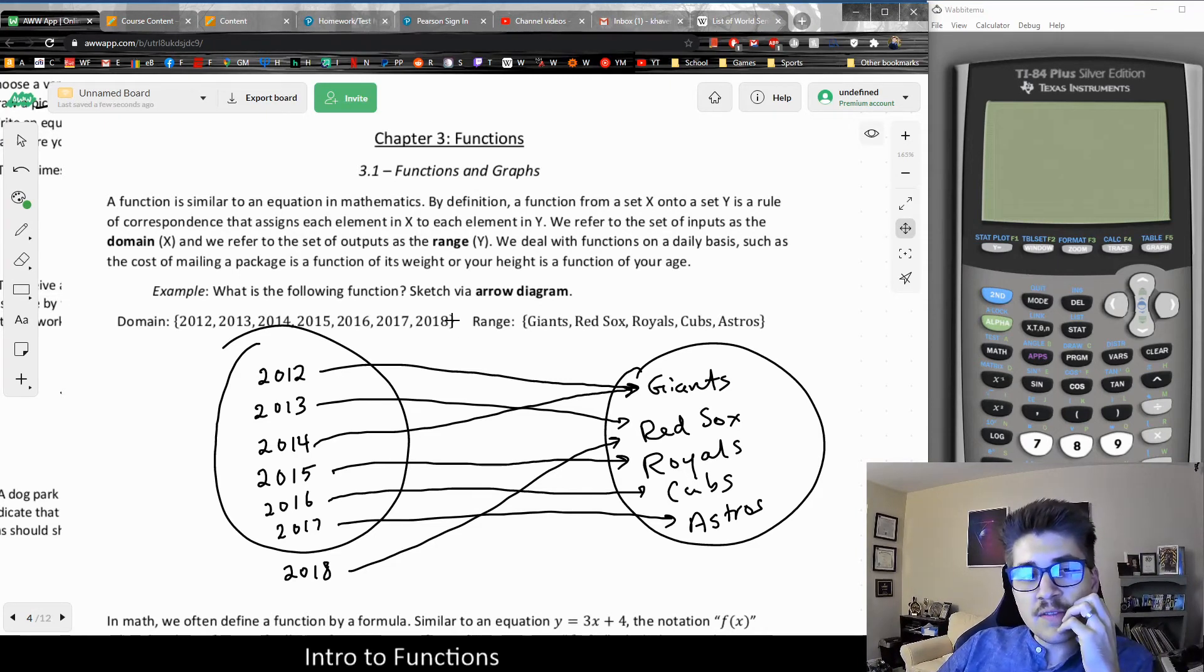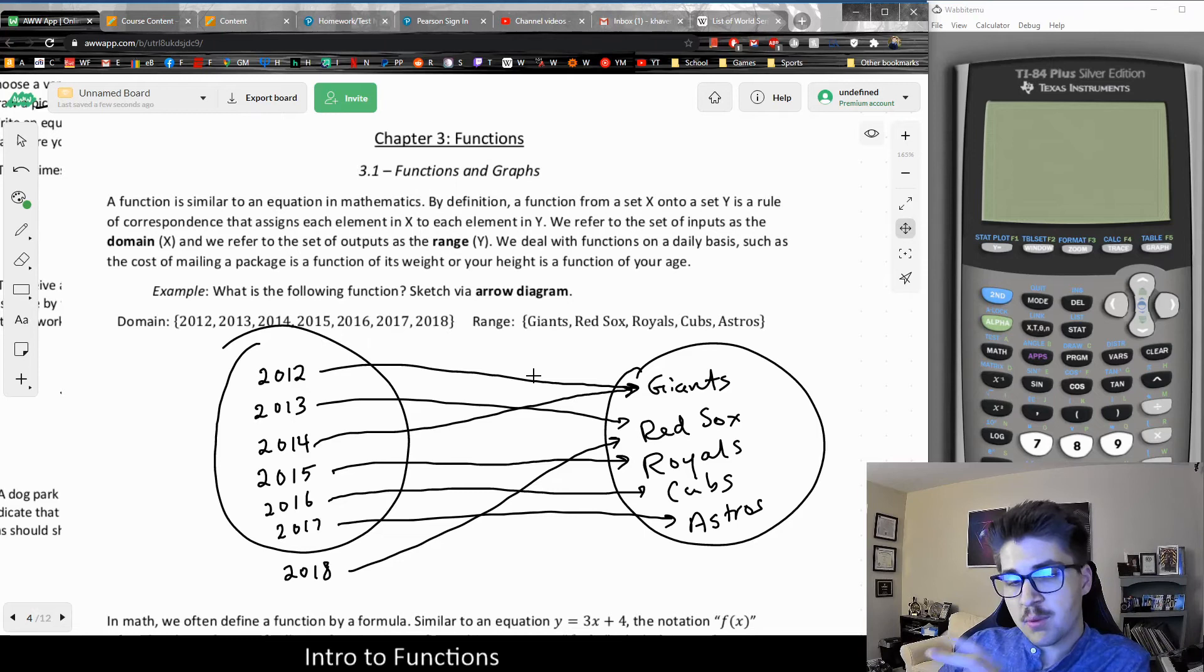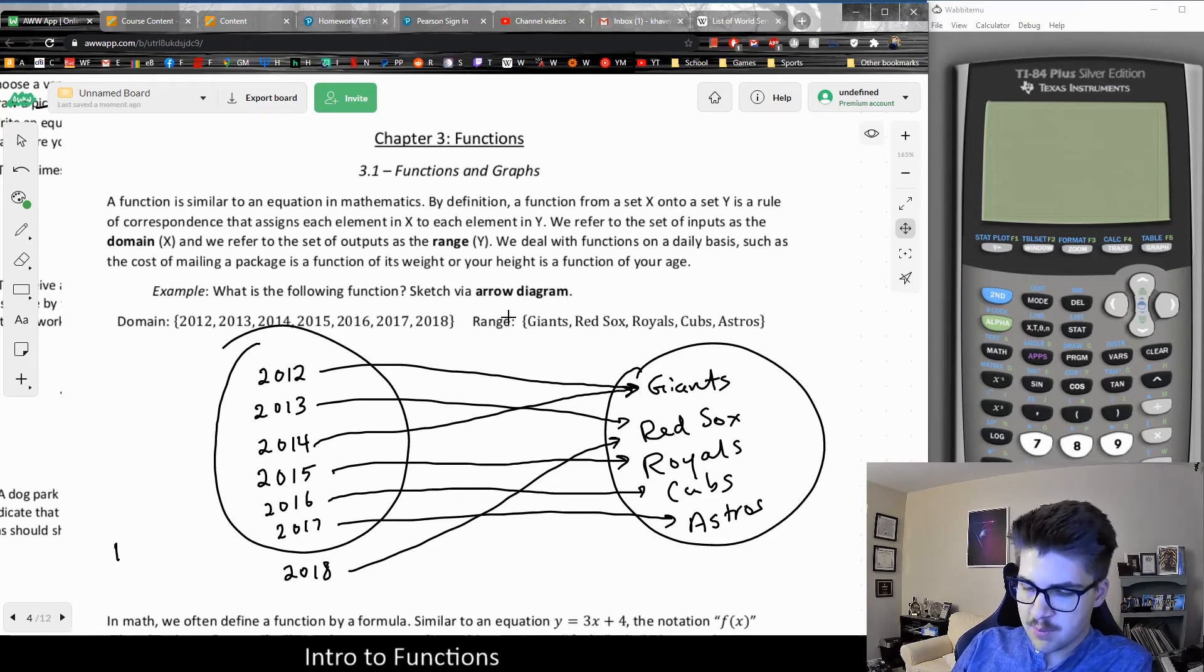Now, the whole point of this illustration was to illustrate things that are allowed in a function and things that are not allowed. In a mathematical function, every input has to be what we say well-defined. If there is an input, there has to be an output. For example, one thing that wouldn't make sense for the domain would be 1402. Because in 1402, baseball didn't exist, as far as I know.